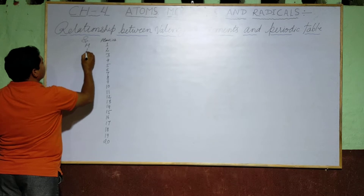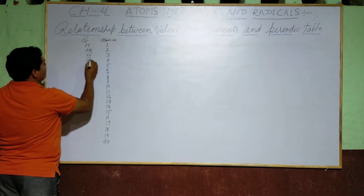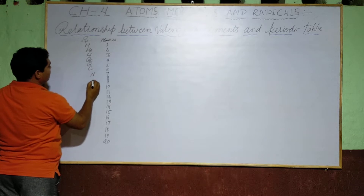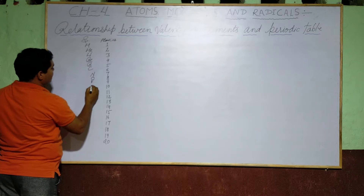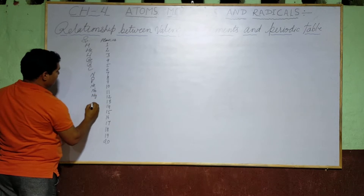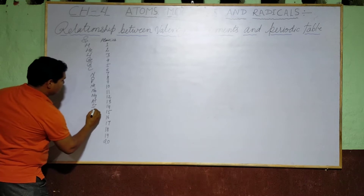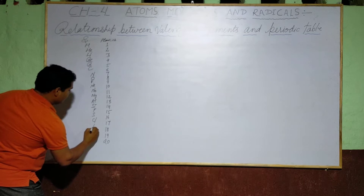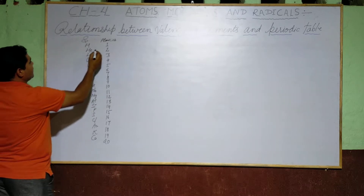The elements are: Hydrogen, Helium, Lithium, Beryllium, Boron, Carbon, Nitrogen, Oxygen, Fluorine, Neon, Sodium, Magnesium, Aluminium, Silicon, Phosphorus, Sulphur, Chlorine, Argon, Potassium, and the last is Calcium.